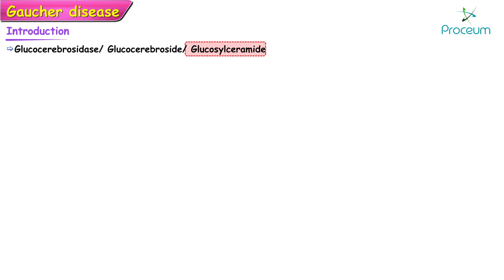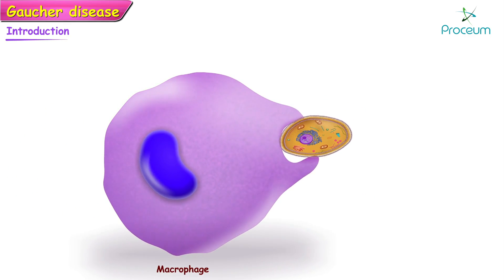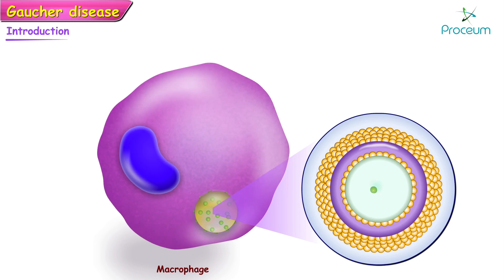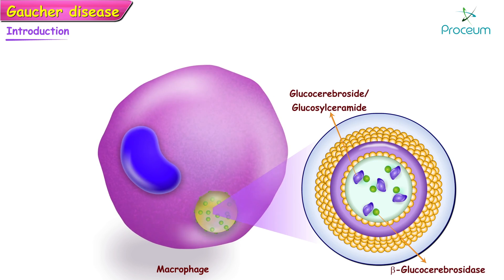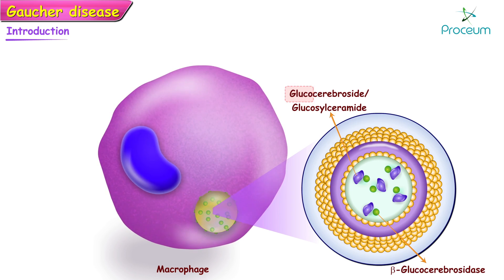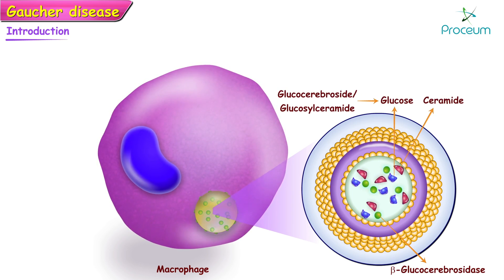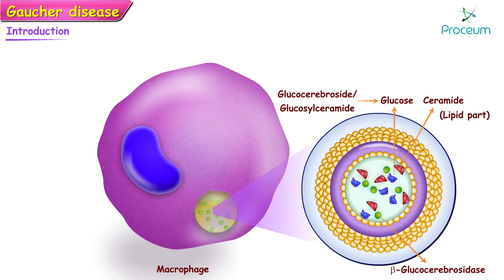Glucocerebrosidase — otherwise known as glucocerebroside, also called glucosylceramide — and several related compounds that are ordinarily degraded to glucose and lipid components accumulate within the lysosomes of the cells. The name reflects two components: the 'gluco' part representing the glucose moiety, and the 'cerebroside' or 'ceramide' part representing the lipid component — so it is a combination of both glucose and lipid.